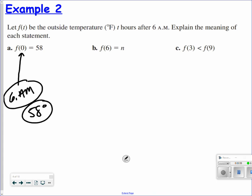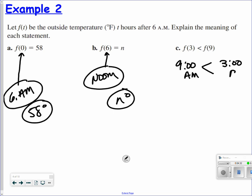So what happens if I did 6? Remember, t is hours. So f of 6. If I went 6 hours after 6 a.m., you're talking about noon. Then the temp is n degrees. f of 3, meaning 3 hours after 6 a.m., would be 9 a.m. The temp is less than what it would be at 9 hours after 6 a.m., which would be 3 p.m. So the temp at 9 a.m. is less than the temp at 3 p.m. Just understanding, plugging numbers in and getting numbers out.